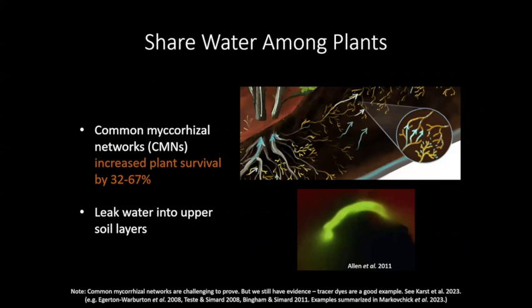Mycorrhizae also seem to share water between plants. Common mycorrhizal networks — two plants linked by a hyphal connection — are really hard to prove. However, the best available science seems to indicate they're also transporting water horizontally under drought conditions to potentially provide water to plants that need it. You can see a hyphal tip actually leaking water, providing water that's available to plants in those upper soil layers.